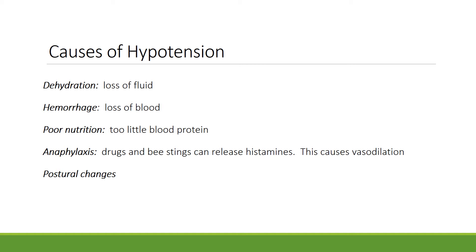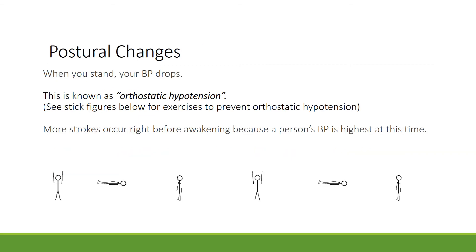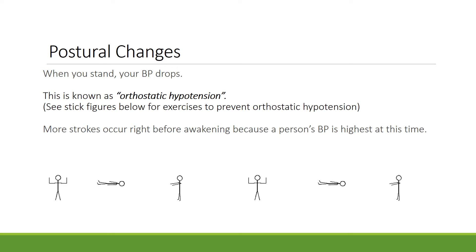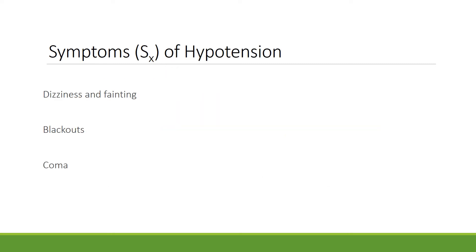Postural changes can also cause hypotension. When you stand up, your blood pressure drops — this is known as orthostatic hypotension. Exercises can help prevent it. More strokes occur right before awakening because blood pressure is highest at that time. When you arise too quickly in the morning, blood moves to different areas of the body and you may feel dizzy. Symptoms of hypotension include dizziness and fainting, blackouts, and coma.